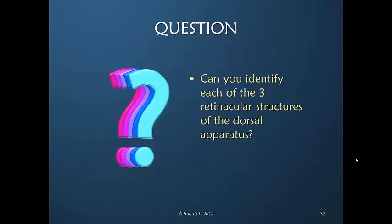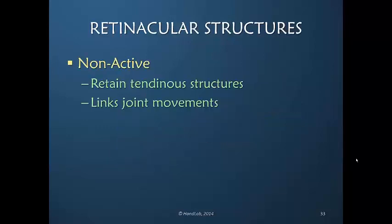Would you be able to identify each of the three retinacular structures of the dorsal apparatus? Retinacular structures can also be called retaining structures. As we know from the dorsal retinaculum and the pulleys of the finger, these are very tenacious, thick, dense tissues that are unyielding and do not stretch. They are not active and are not connected to any source of power; their goal is to retain the tendinous structures. In the dorsal apparatus, there is also a secondary function of linking joint movement.